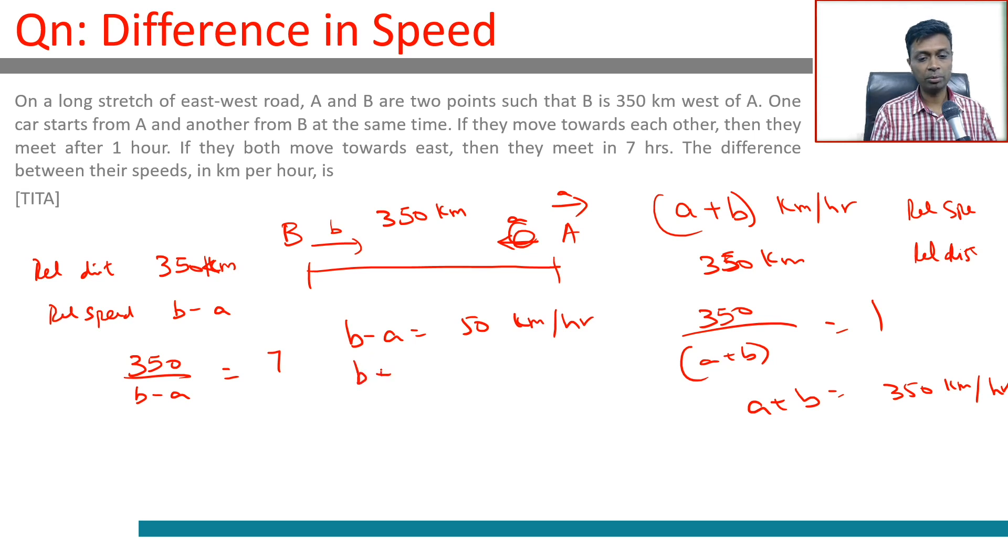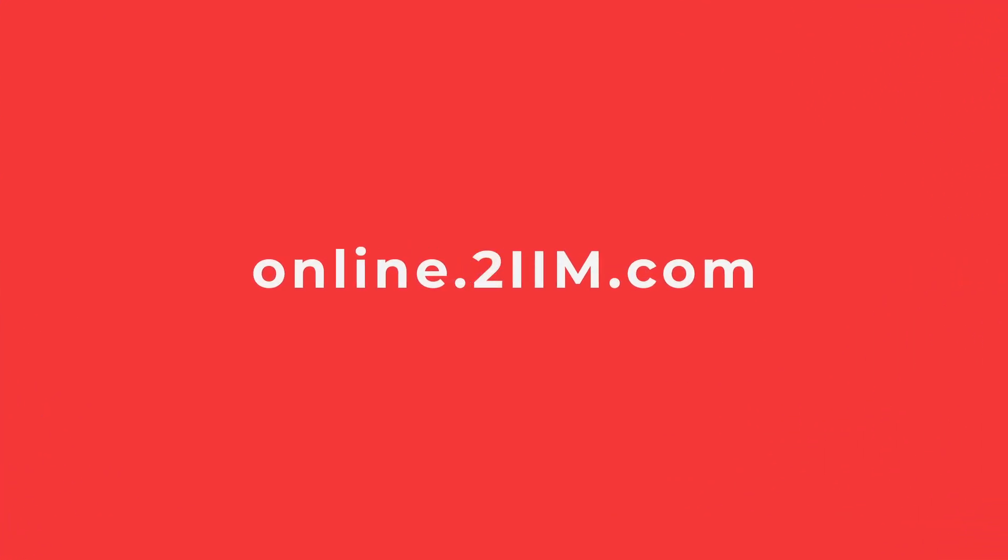We know that B plus A is 350. We can find B and A. But we are asked for the difference between their speeds in kilometers per hour. Difference between their speeds in kilometers per hour is just B minus A which is 50 kilometers per hour. The first point is not even needed. Only this we need. And the answer is 50 kilometers per hour.